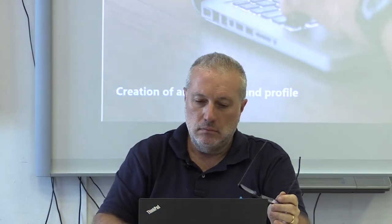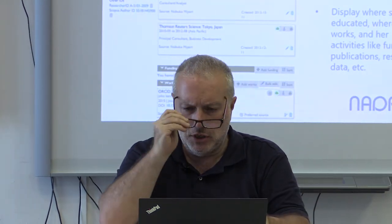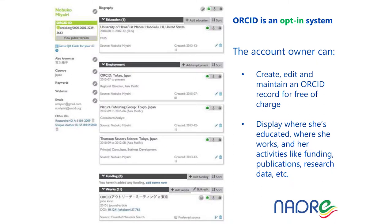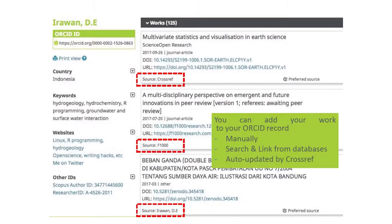As a short recap: ORCID is an opt-in system. Account owners can create, edit, and maintain their ORCID records for free, and display where they are educated, where they work, the activities they are funded for, publications, research data, and so on. Another very interesting feature is that you can automatically search for your publications, datasets, or research objects in general, and either manually or automatically link them to your ORCID profile.